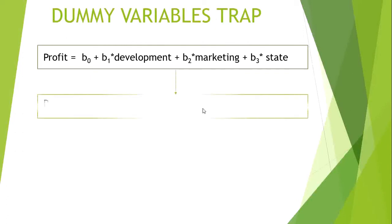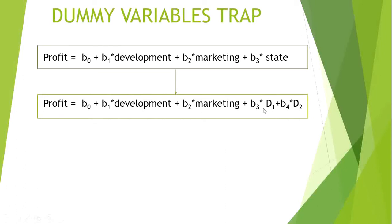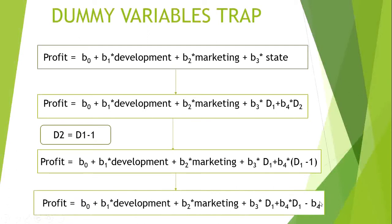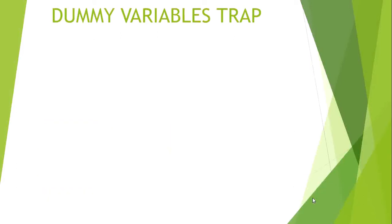So what is this trap? The original equation was: profit = B0 + B1·development + B2·marketing + B3·state. If we use both dummy variables, the equation becomes: ... + B3·D1 + B4·D2, where D1 is the dummy variable for Maharashtra and D2 for Gujarat. But notice that D2 = 1 - D1, since when one is 1 the other is 0. Substituting, B4·D2 = B4·(1 - D1). Expanding this introduces a new constant term into the equation, which destroys the model because a redundant constant appears and the model cannot be trained properly. That is why you should always omit one column. If you have 3 categorical values, use only 2 — always n minus 1 columns.